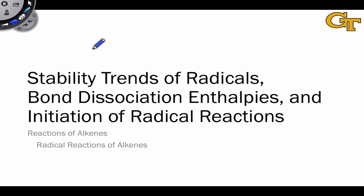We noted in the last video that the key to understanding radical structure and stability trends is to recognize that they're for the most part electron deficient, so their stability trends mirror those of carbocations. We're going to see that in more detail in this video, and we're also going to look at bond dissociation enthalpies, which give us insight into stability trends and provide the empirical evidence for the stabilities of radicals.